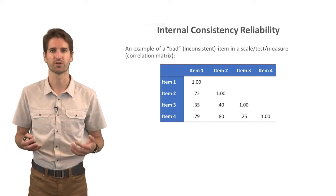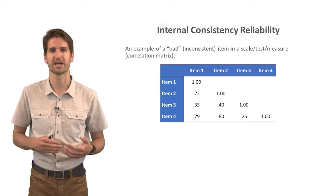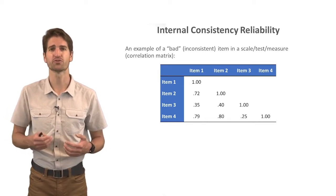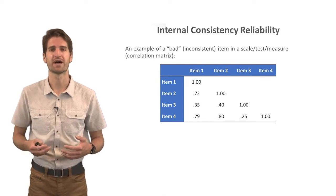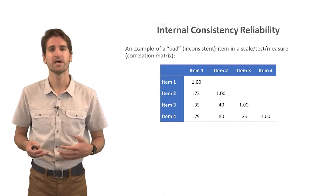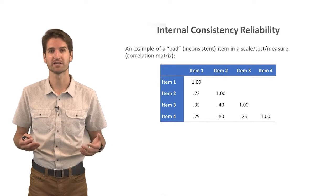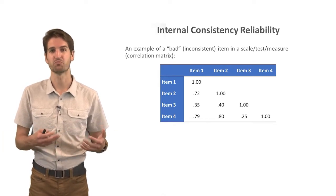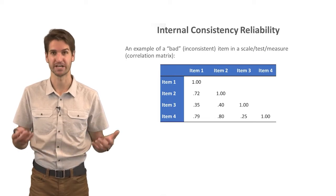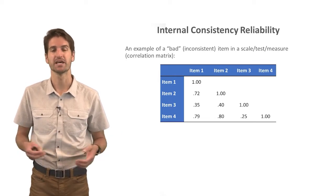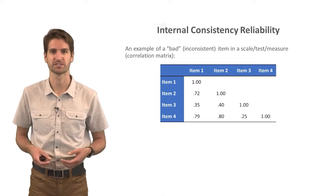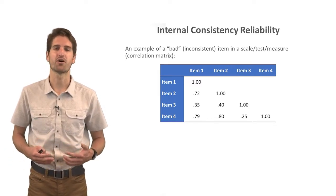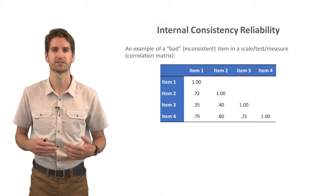Let's take a look at this correlation matrix. We're just going to look at the bottom diagonal, because obviously the upper diagonal is not available. Notice that on the diagonal you have values of 1.00, which shows that every item is perfectly correlated with itself — scores on item one will be perfectly correlated with scores on item one. What's really meaningful to us are the correlations that fall below that diagonal.